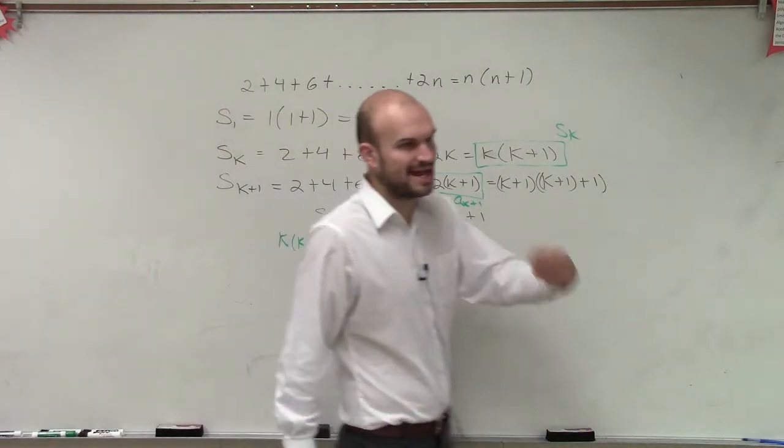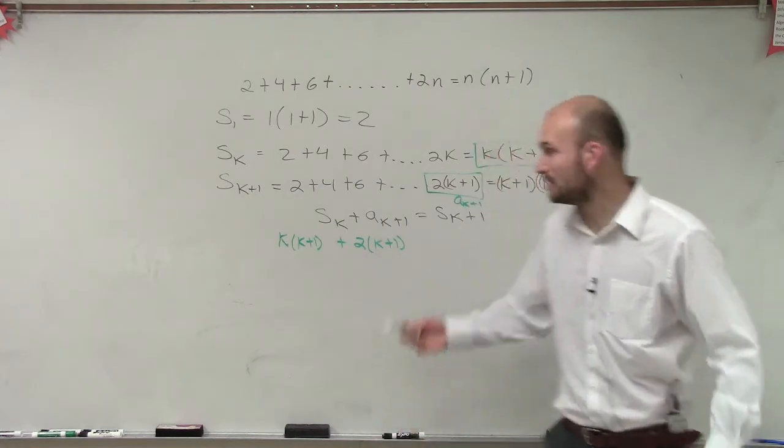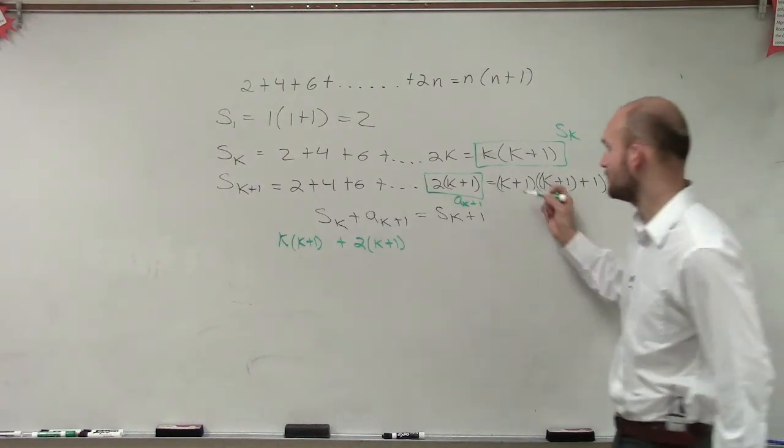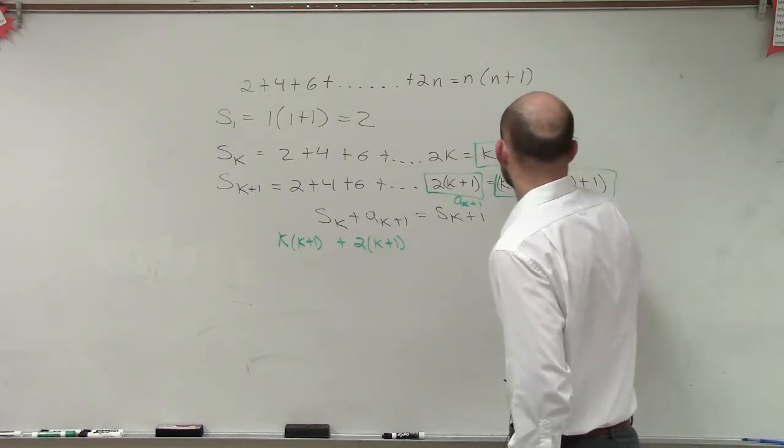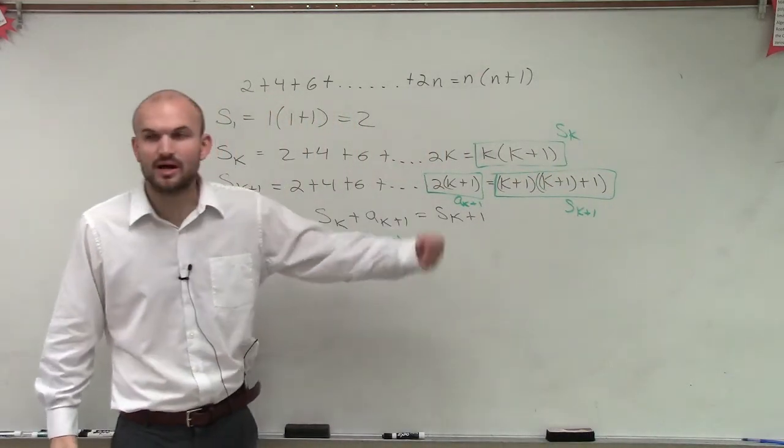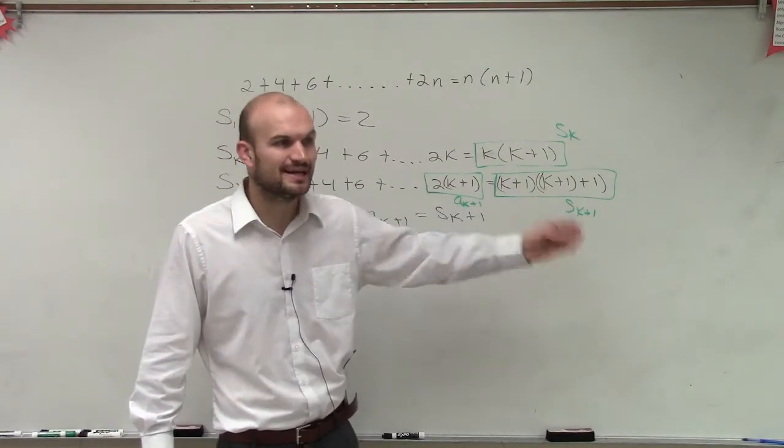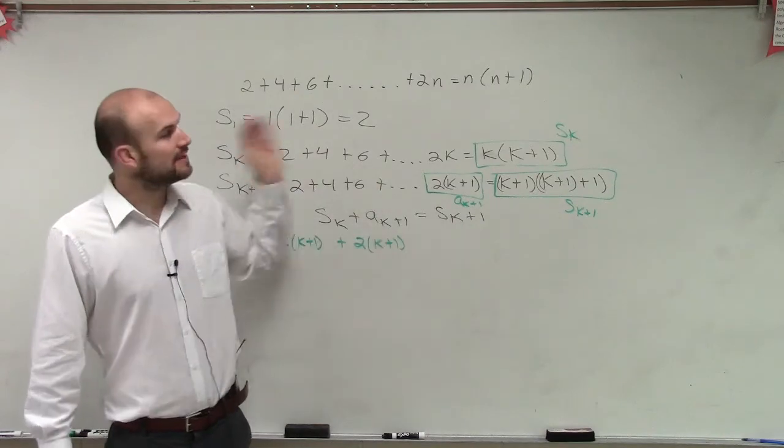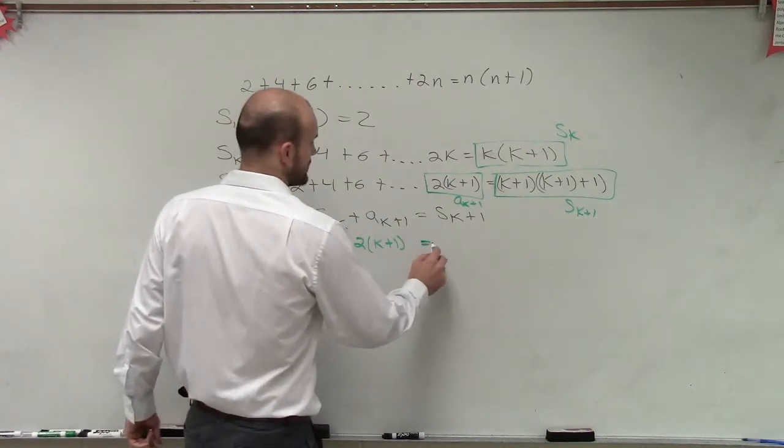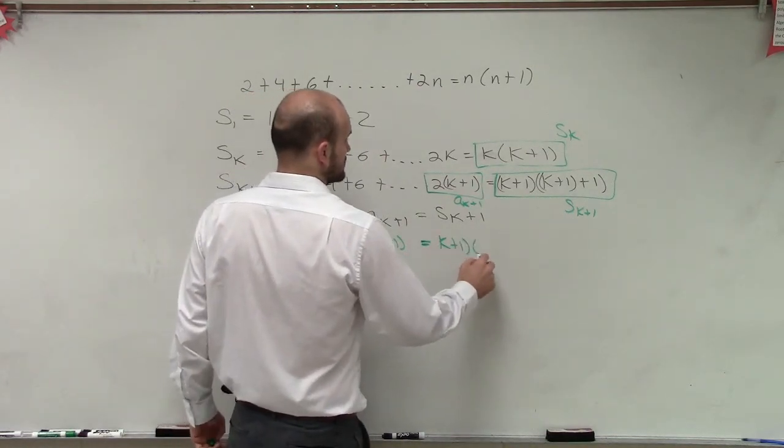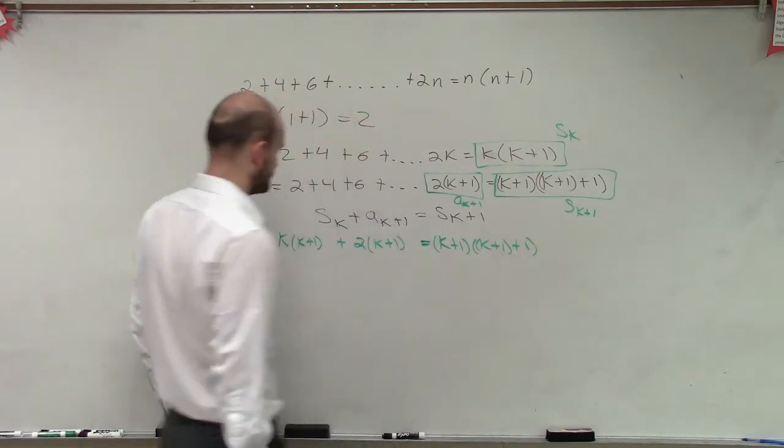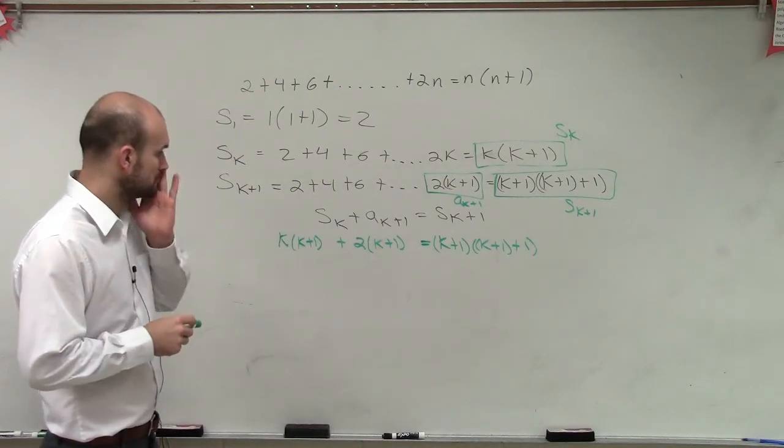So the sum of k plus a plus 1 has to equal the sum of k plus 1. Well, what does the sum of k plus 1 equal? It's right here. This is s of k plus 1. And if we can prove that the sum of k plus our next sum term, a of k plus 1, is equal to s of k plus 1, then we know that it's going to be true for all our values. So therefore, that equals k plus 1 times k plus 1 plus 1.